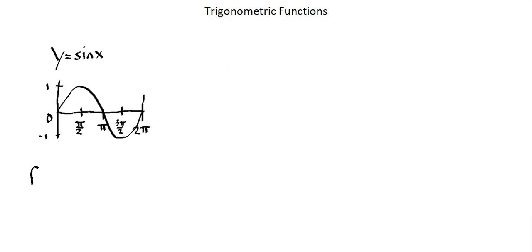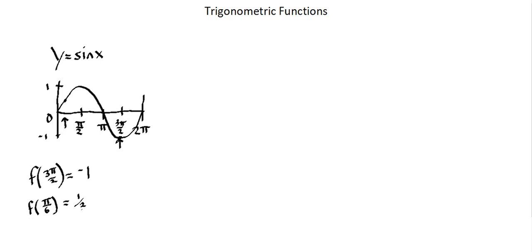So for y equals sine of x, if I have an input of 3π over 2, then I can see on the graph where 3π over 2 is on the x-axis, the y value is negative 1. Or the input value of π over 6 — π over 6 is close to 0, far to the left of the curve. At π over 6, I can identify my y value approximately with the graph, or exactly with algebra, as 1 half. The sine value at π over 6, as we see on the graph as well as the unit circle, gives us sine equals 1 half.